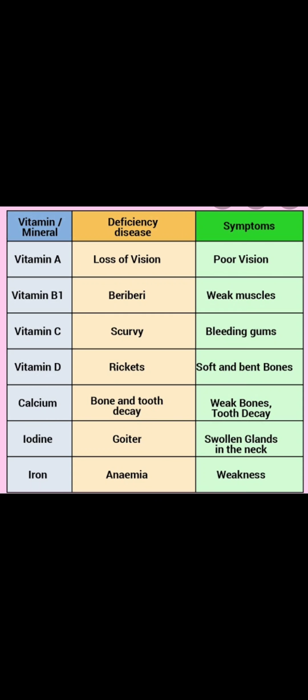Iron deficiency leads to anemia, which is characterized by less blood content, causing weakness and a pale yellow body. Besides these diseases, when people do not get sufficient food to eat, they become weak, and such a condition is called malnutrition.